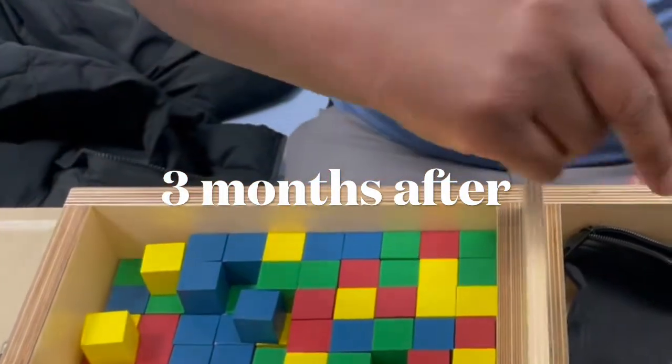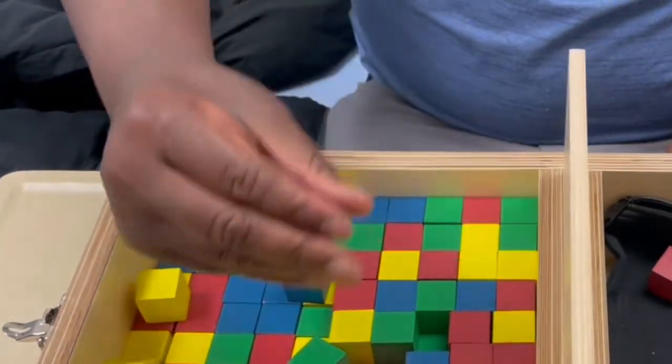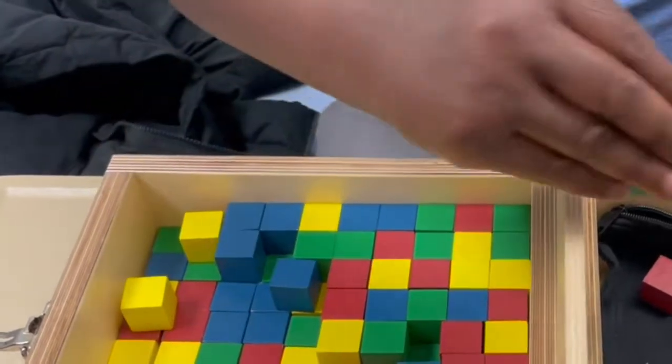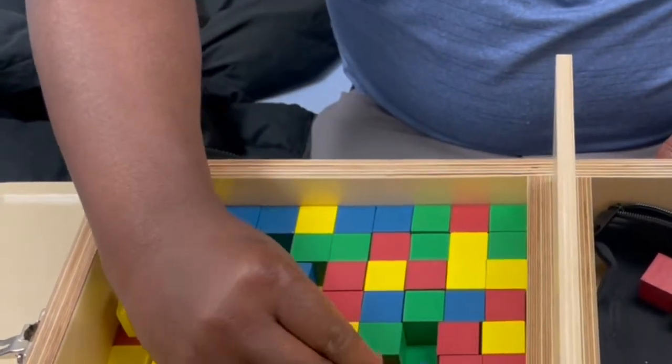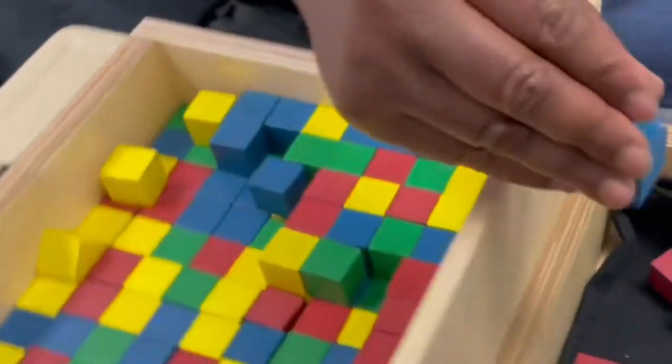At three months he's getting better, and if you look at the position of his hand he's still using the first and second but now he's adding the third finger and he can actually use all of the fingers to do this function, so he's improving with time.